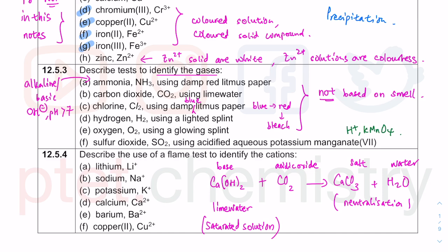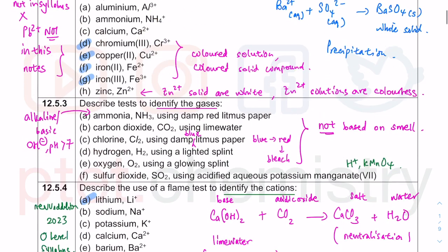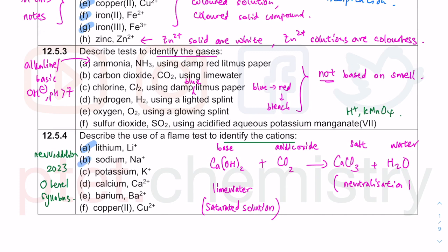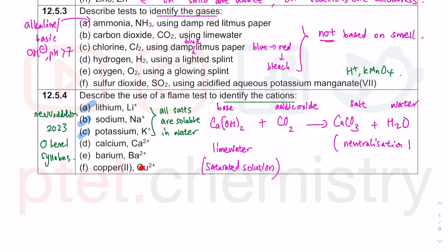The flame test is a new addition to the 2023 O-Level syllabus, though similar questions have appeared in IGCSE extended chemistry for years. We use flame tests to further identify cations — particularly lithium, sodium, and potassium, since all their salts are soluble in water and adding sodium hydroxide won't form a precipitate. Flame colors are given in Paper 3 (practical) but will never be given in theory papers.